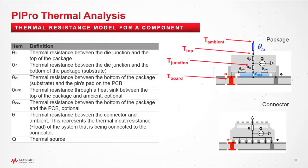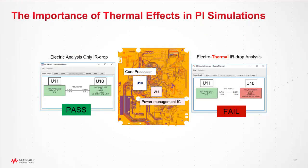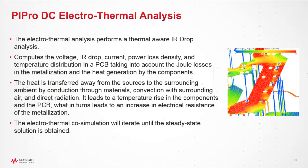Now let's understand PI Pro DC electrothermal analysis. It is quite important because this could be the difference between pass and fail criteria, as higher temperature results in higher joule loss from the conductor materials.